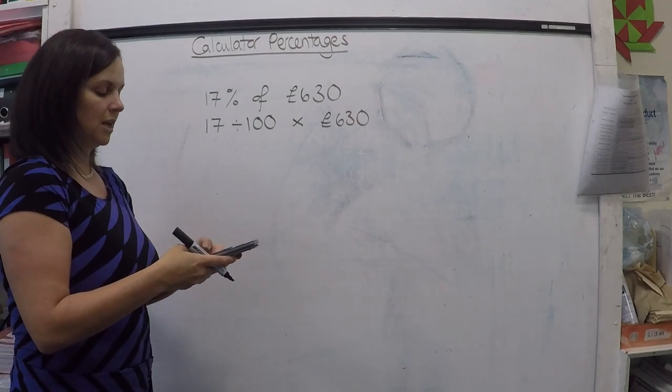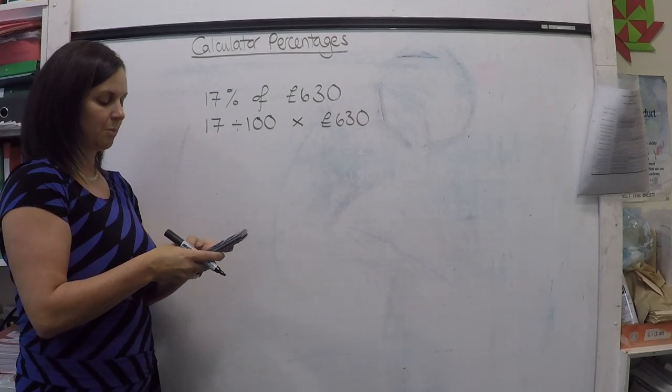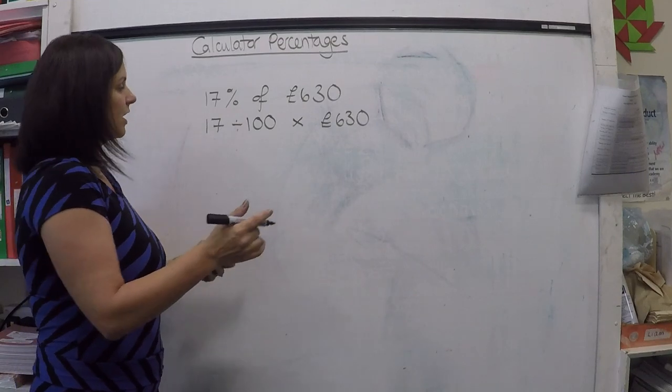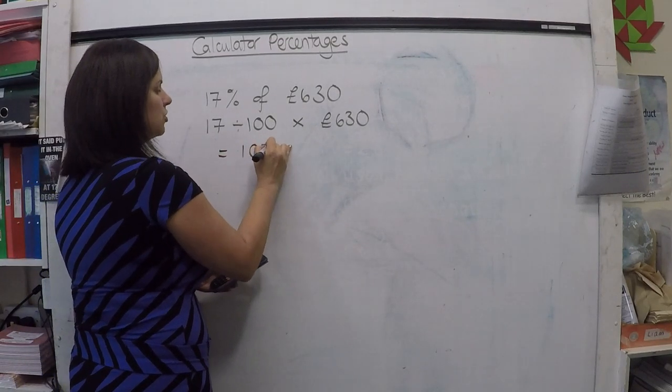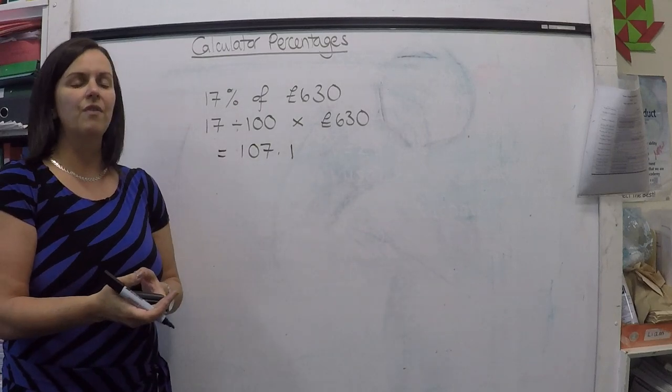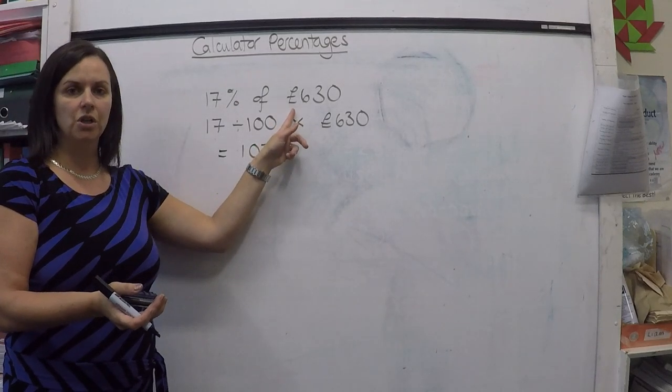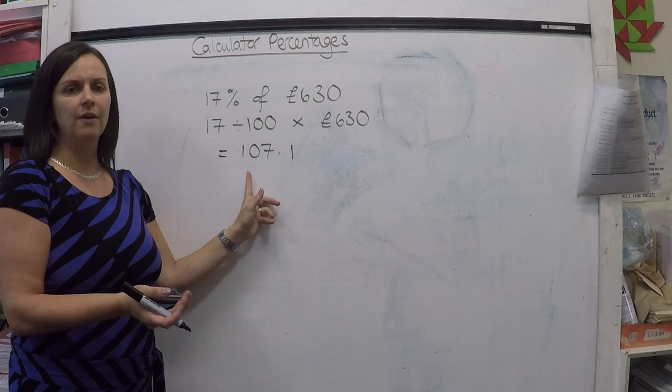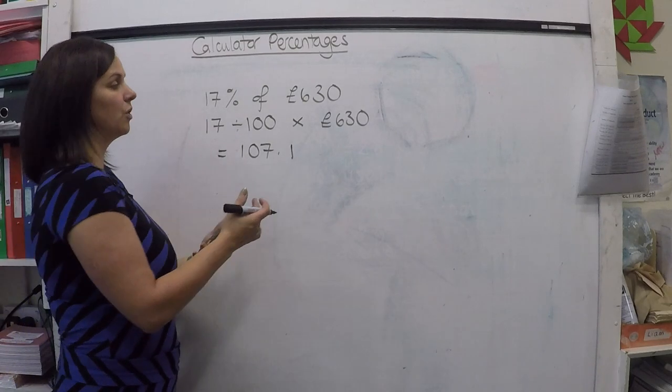If you take that into your calculator, 17 divided by 100 multiplied by 630, the calculator will give you the answer 107.1. However, this was a money question - £630 - so 107.1 wouldn't be a good way to leave our answer.